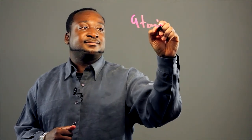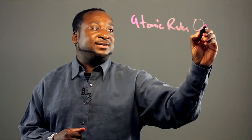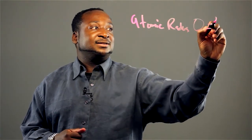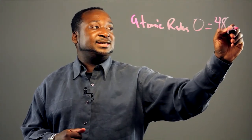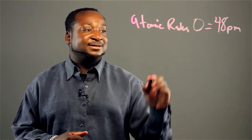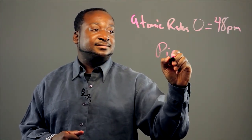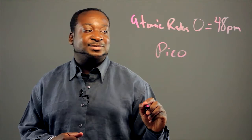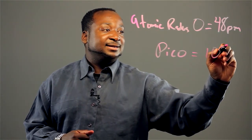Now, by the periodic table of the elements, we get the atomic radius of oxygen. That's equivalent to 48 pm, picometers. The P stands for pico, and we know that pico equals 10 to the negative 12.